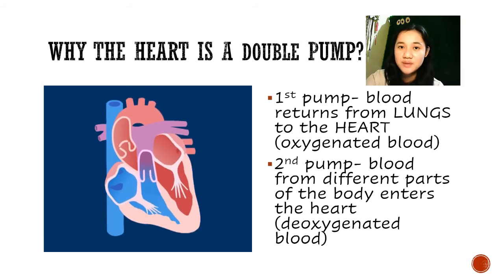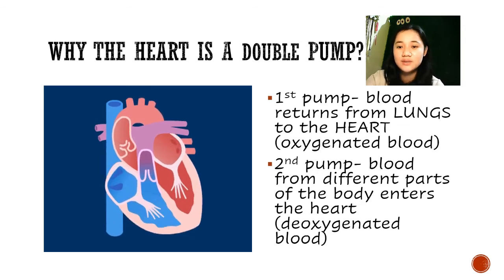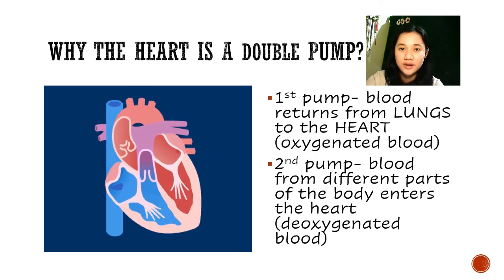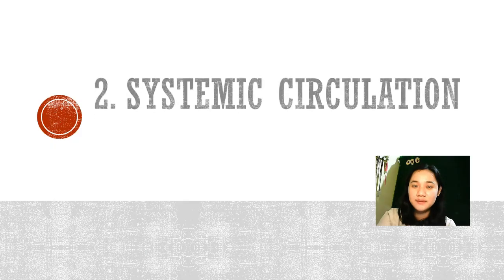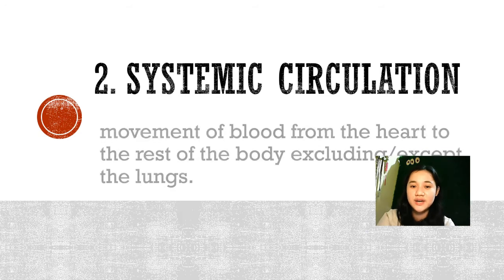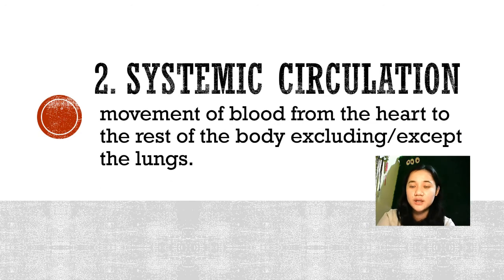So again, the first pump is from the lungs to the heart, while the second pump is from the different parts of the body to the heart. The second type of blood circulation is the systemic circulation, which is defined as the movement of blood from the heart to the rest of the body, excluding the lungs.